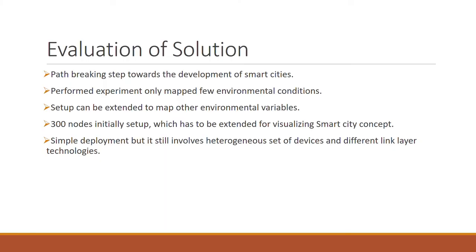In conclusion, urban IoT is a path-breaking step towards the development of smart cities. The performed experiment only mapped a few environmental conditions but can be extended to map other environmental variables as well. The initial setup was only 300 nodes but must be extended for fully realizing the smart city concept. This simple deployment still involves a heterogeneous set of devices and different link layer technologies, showcasing how they can be integrated together.